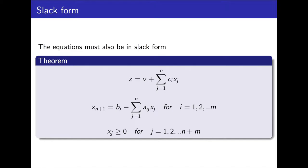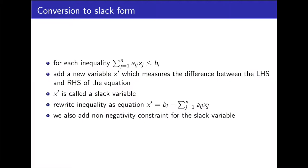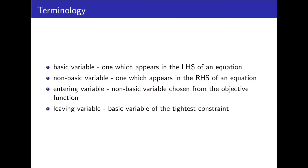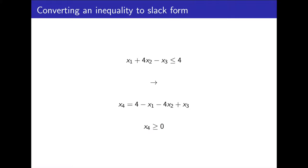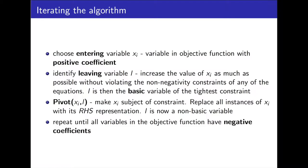Shown here is the definition of slack form. Notice that the objective function is now an equality. For each inequality, convert it to an equality by adding a surplus slack variable, along with its non-negativity constraint, and then rearrange to make bi the subject. The slack variable measures the difference between the left-hand side and right-hand side of the equation, which helps us determine how much variables can be increased without violating constraints. A basic variable is one which appears on the left-hand side of an equation; a non-basic variable appears on the right-hand side. The entering variable is a non-basic variable chosen from the objective function with a positive coefficient. The leaving variable is the basic variable of the tightest constraint. For example, converting x1 plus 4x2 minus x3 less than or equal to 4 to slack form, we add slack variable x4, rearrange to make it the subject, and add the non-negativity constraint.